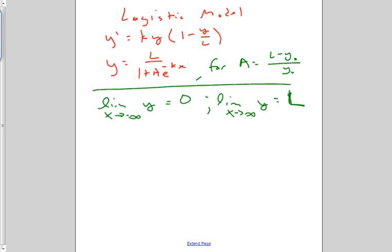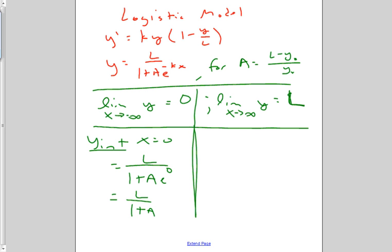So the y-intercept is going to be L over 1 plus A times e to the 0, which is just L over 1 plus A.